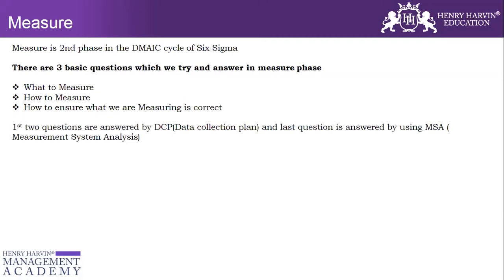The first two questions — what to measure and how to measure — are answered by DCP, known as the Data Collection Plan. The last question is answered by MSA, which is called Measurement System Analysis. We will first learn what the Data Collection Plan is in the Measure phase of Six Sigma.